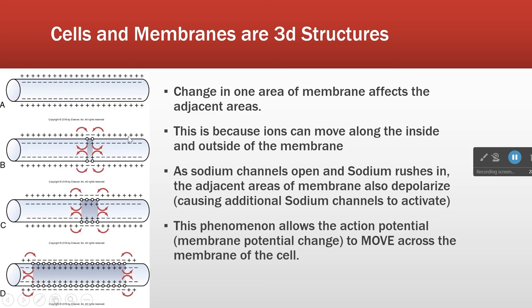Remember that the whole membrane of these nerve cells is full of voltage-gated channels. So when we get a membrane potential change in one area, it ends up being conducted to other areas, because when the membrane potential changes here it opens those voltage-gated channels, allowing more sodium to come in. So we see propagation of the membrane potential change in both directions.